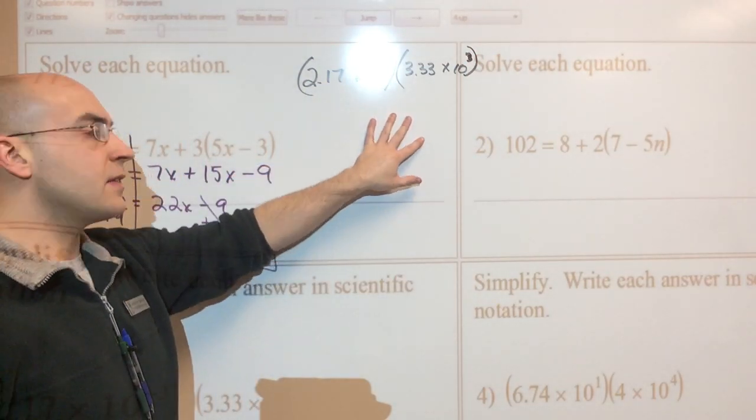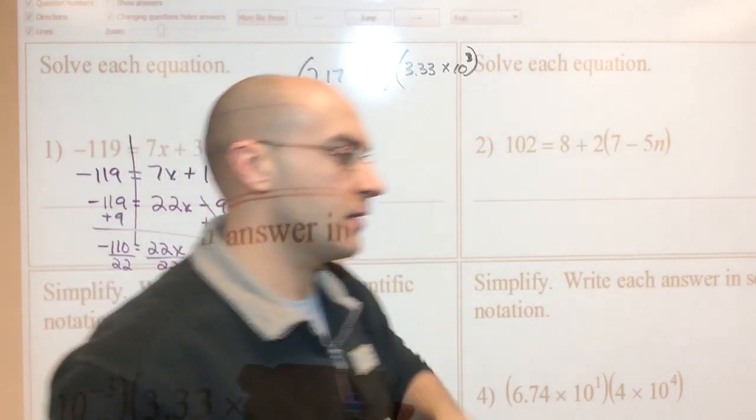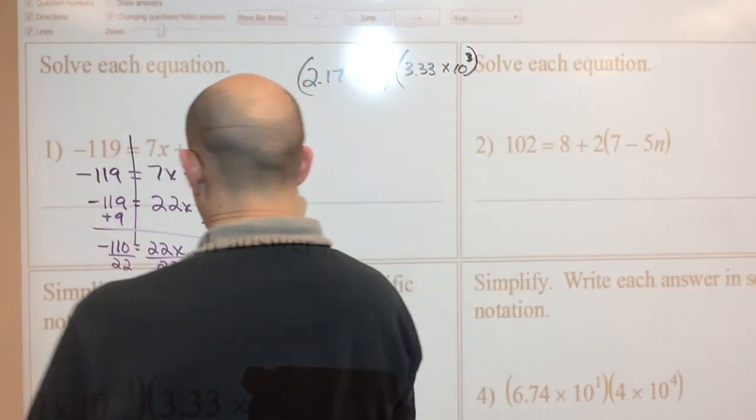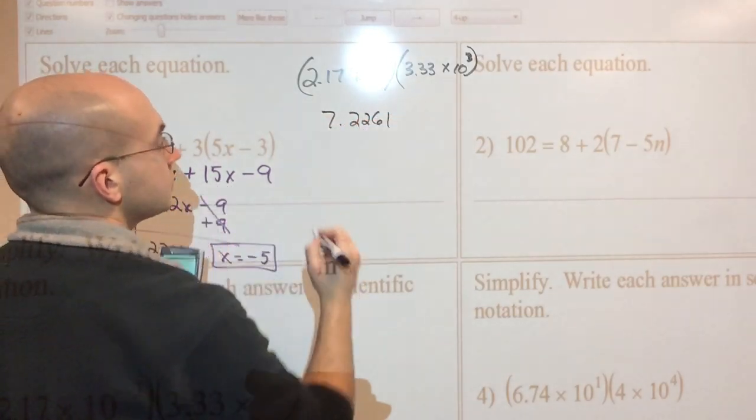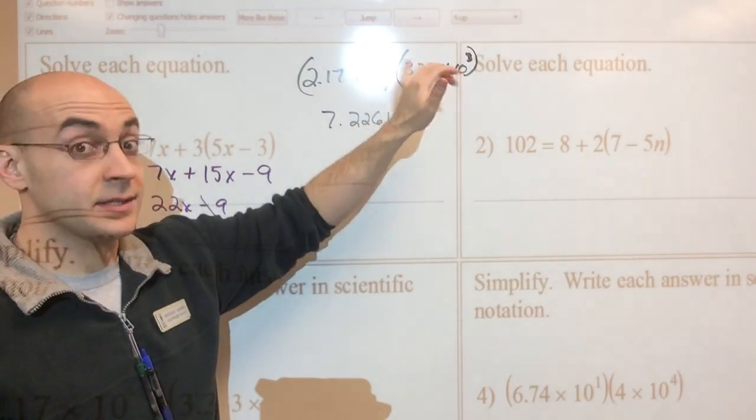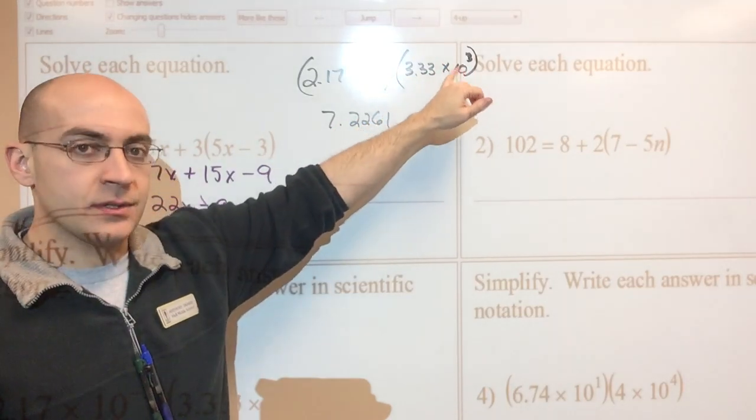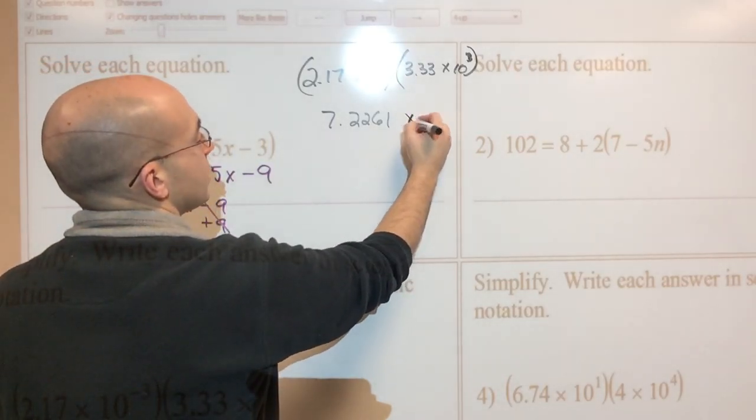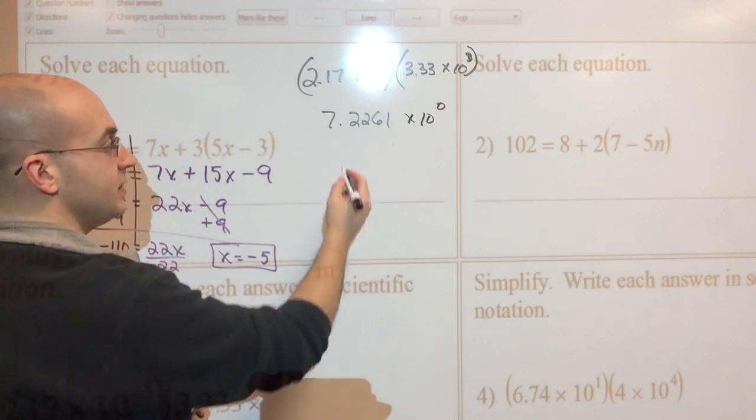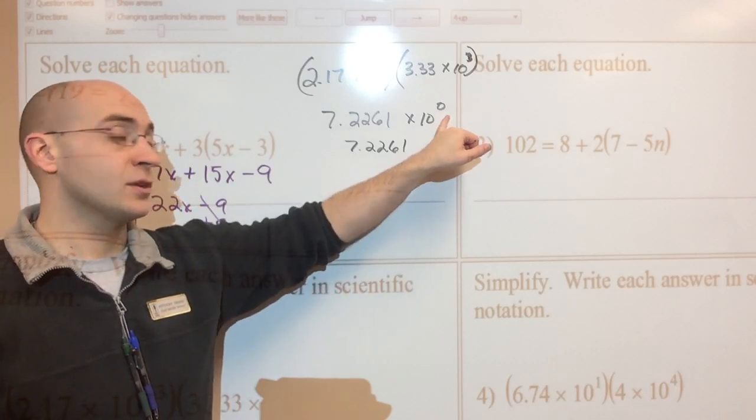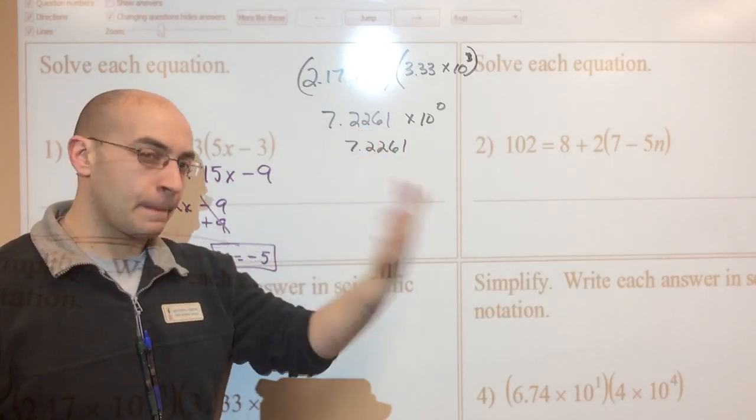When I'm multiplying these two things together, I first want to multiply the two actual number values together. So go ahead and multiply 2.17 times 3.33, and I get 7.2261. Now the rule is when I multiply with exponents and they have the same base, that's 10 on both of them, I am actually adding these things. So it's negative 3 plus 3. Well, that's 0. So this is 7.2261 times 10 to the 0 power, or simply just 7.2261, because anything to the 0 power is 1.